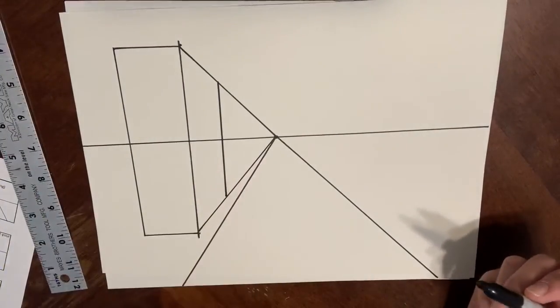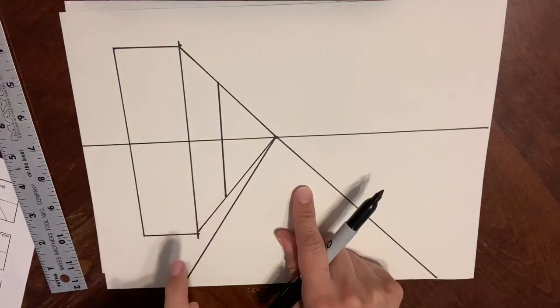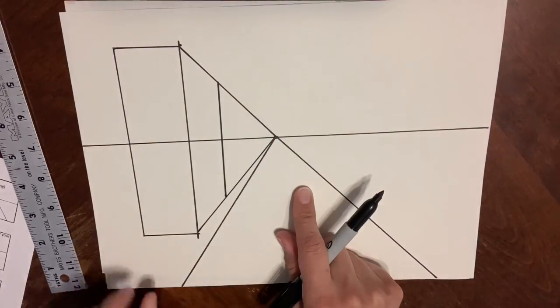Now I'd want to erase all my unnecessary lines. So these lines going through the building are unnecessary. The line going from the corner of the building to the vanishing point is also unnecessary.